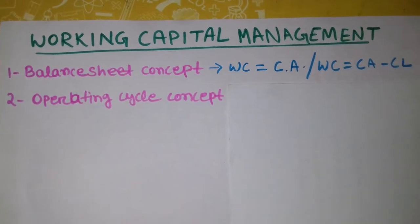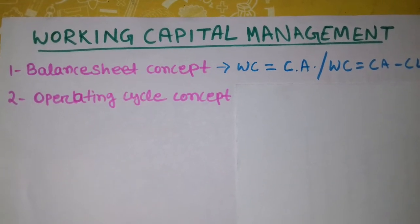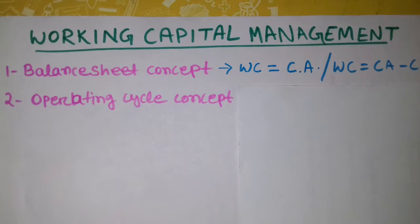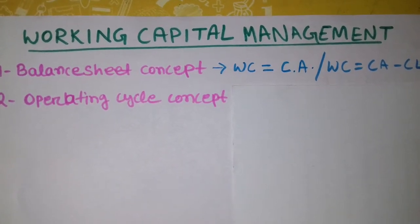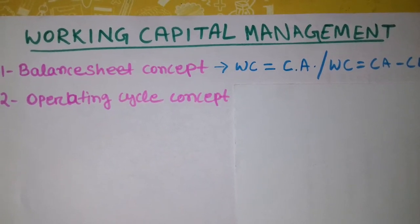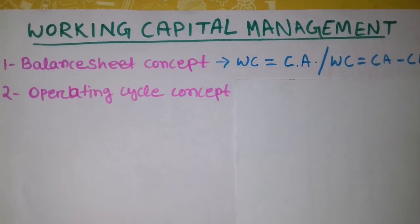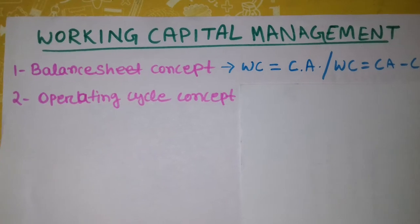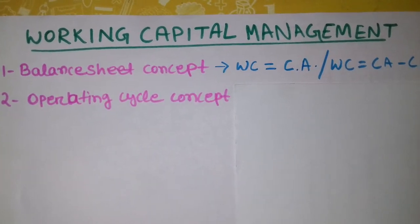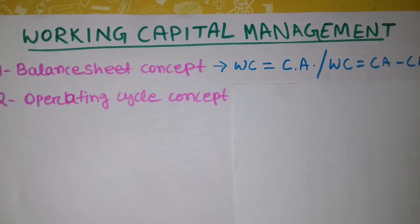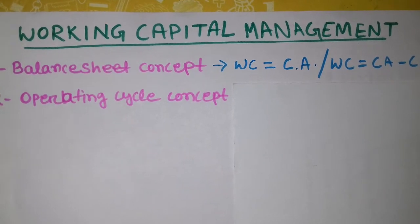The balance sheet concept has two types: one in the broad sense and one in the narrow sense. In the broad sense, we call it gross working capital, which represents the total amount that the company has invested in its current assets. This is referred to as the financial concept and going concern concept.